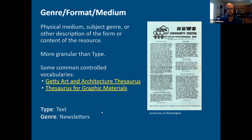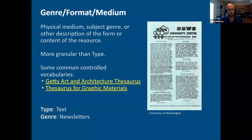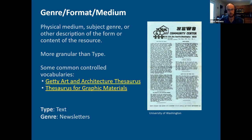The genre or format field is a place to get more specific and granular than the type field. People use different terms — genre, format, or medium. The SSDN metadata participation guidelines call this 'format.' These are the more specific types that let you really say what the item is: the physical medium — like with photographs, you might specify ambrotype or stereograph — or the intellectual genre, like portrait photograph or landscape photograph. Common controlled vocabularies include the Art and Architecture Thesaurus and the Thesaurus for Graphic Materials. In the newsletter example, the type is 'text' and the genre is 'newsletters.'